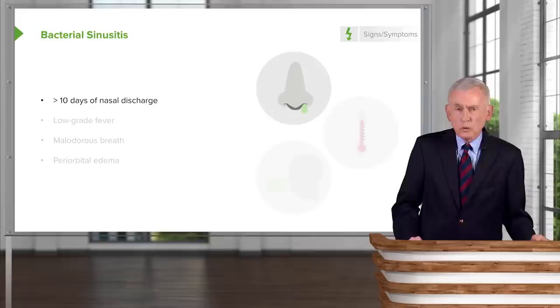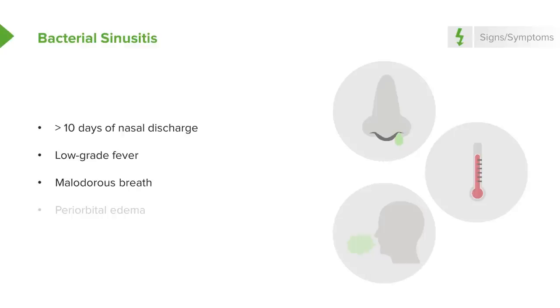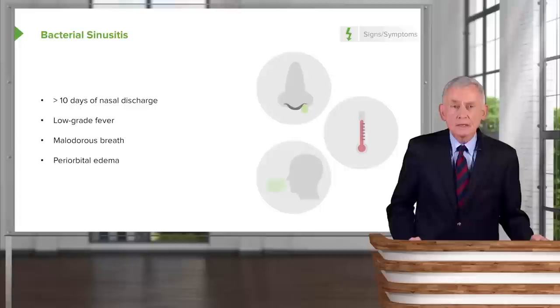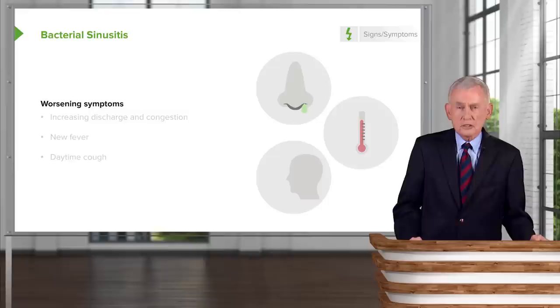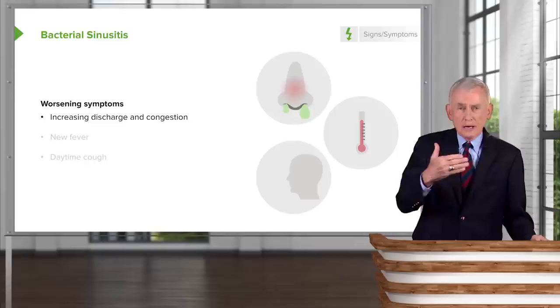We start thinking about bacterial sinusitis if they've had more than ten days of nasal discharge, if they have low-grade fever, if they have malodorous breath — which reflects the possibility of anaerobic contamination — and certainly if they have periorbital edema, because that usually means bacterial sinusitis; viruses don't do that. We also think about it if symptoms were getting better but now the patient is starting to have increased discharge and congestion — a turnaround.